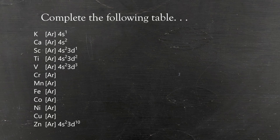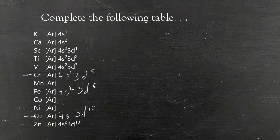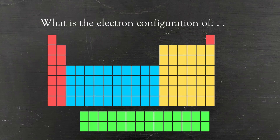This leads into the final question type: complete the following table — a real first-year chemistry exam question. What they're looking for is whether the student understands the stability associated with half-filled and filled suborbitals, or whether they'll simply continue the expected trend. The two exceptions students need to be aware of are chromium and copper. For chromium, we put only a single electron into the 4s suborbital so that we can have 3d5 — a half-filled orbital. For copper, just like silver, we have 4s1 so we can have 3d10. The rest of the elements follow the expected trend — for example, iron is 4s2 3d6, and nickel is 4s2 3d8.